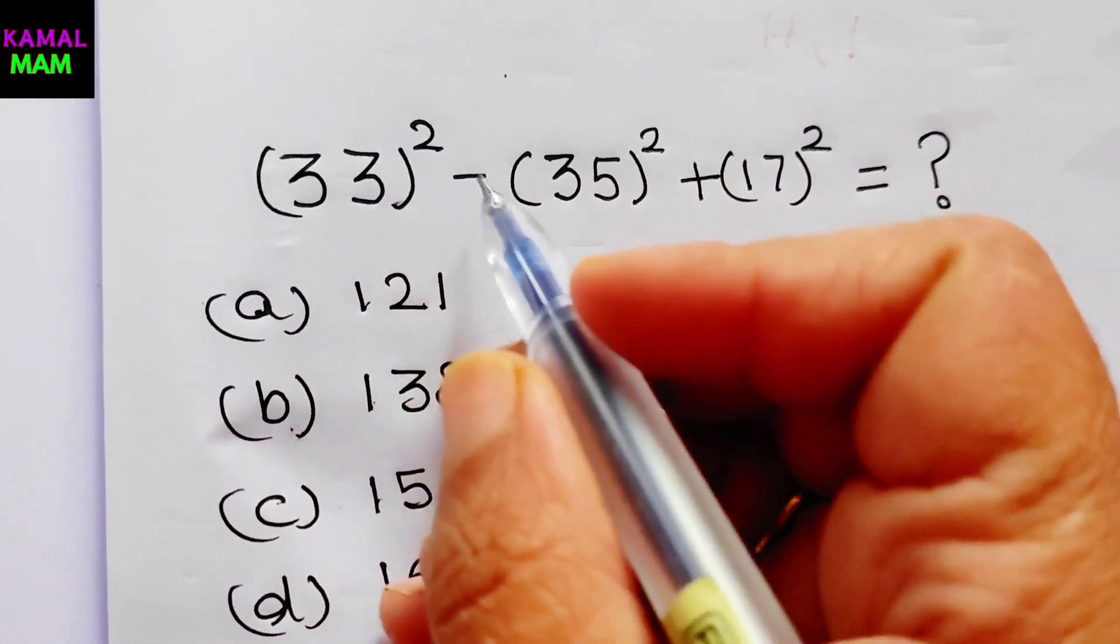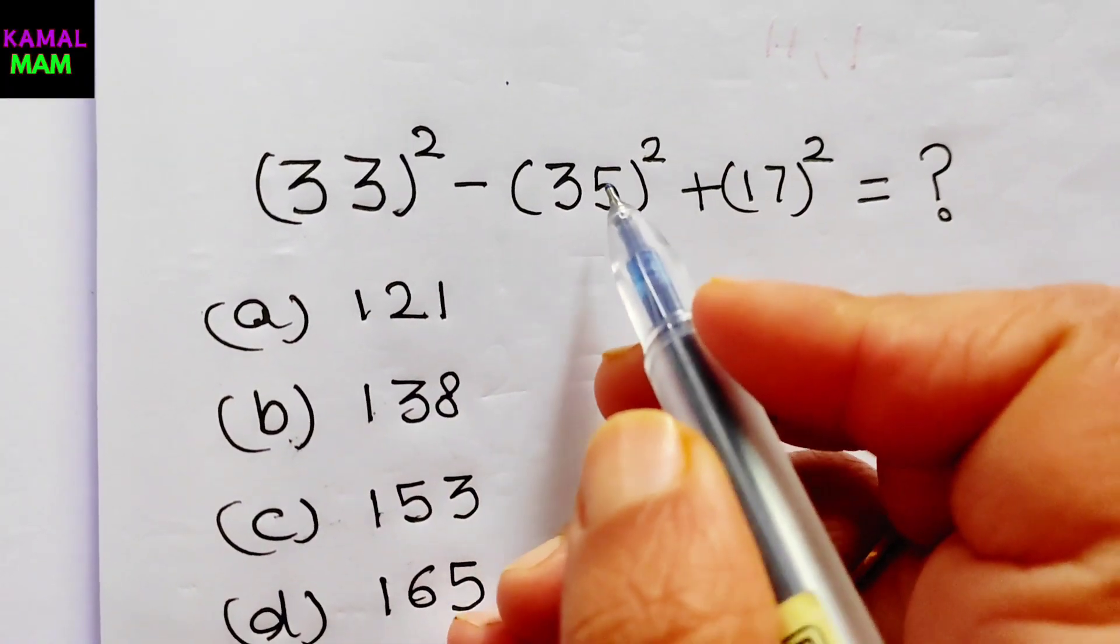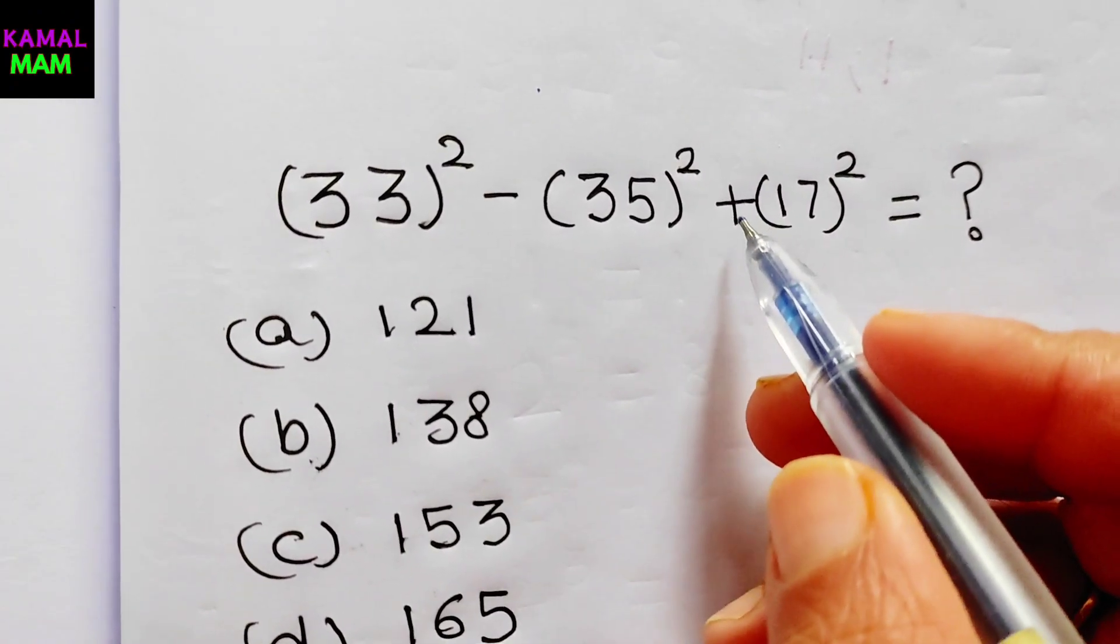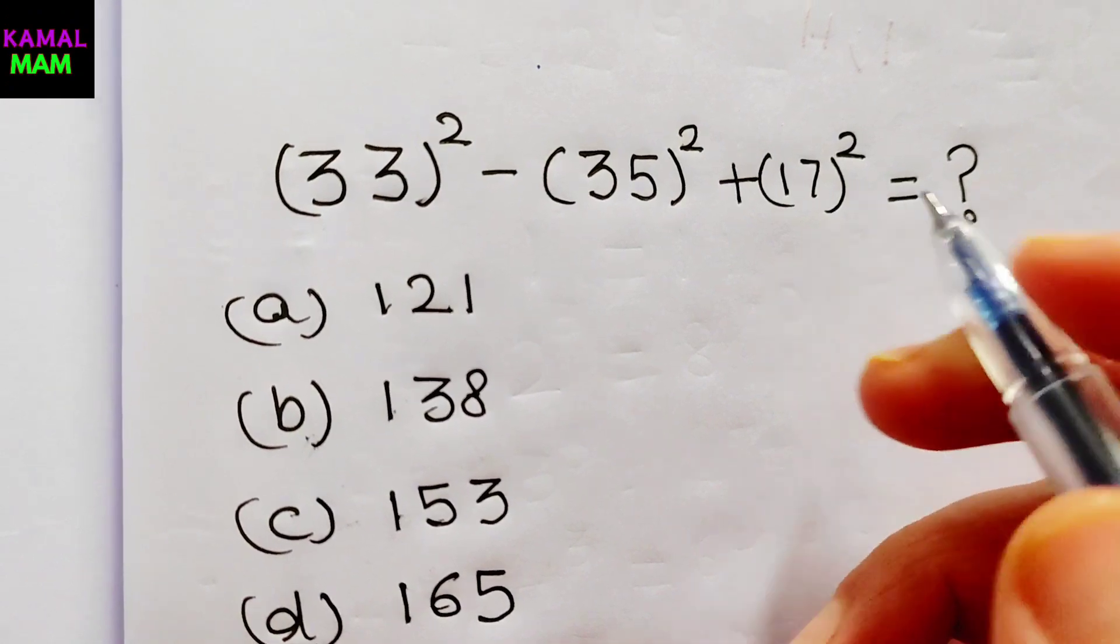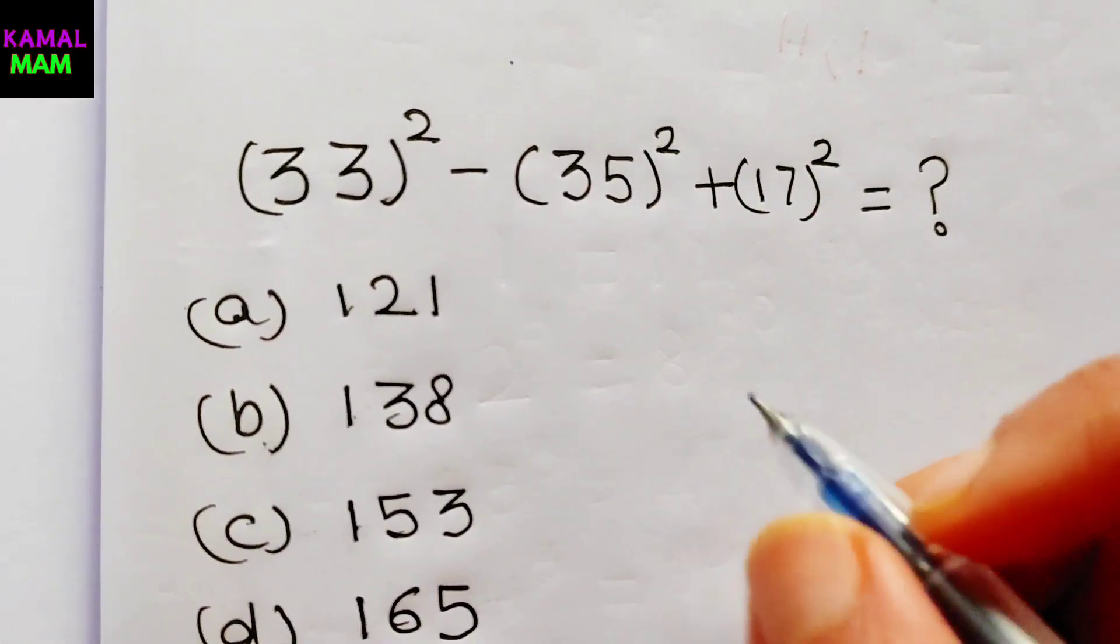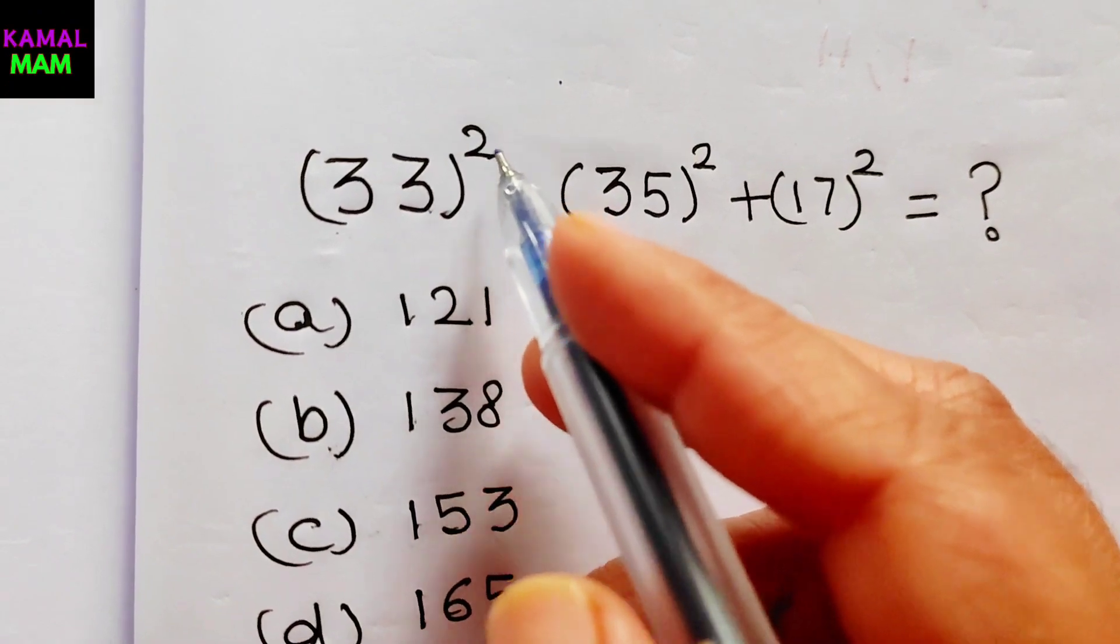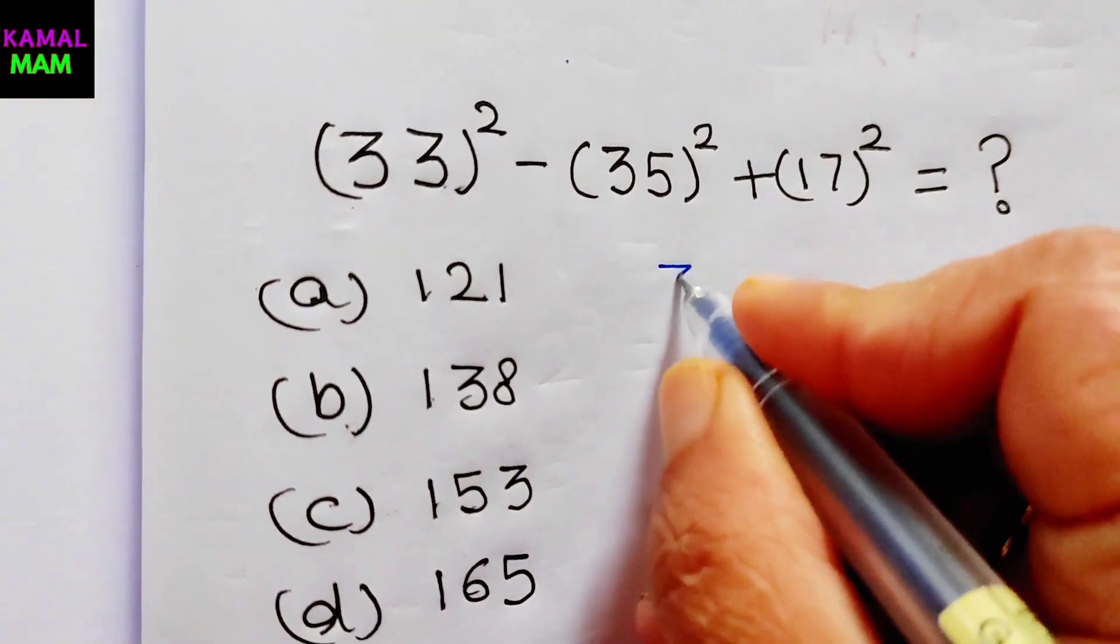33 raised to power 2 minus 35 raised to power 2 plus 17 raised to power 2 equals what? We have to find it. So firstly solve 33 raised to power 2. How we can solve it?